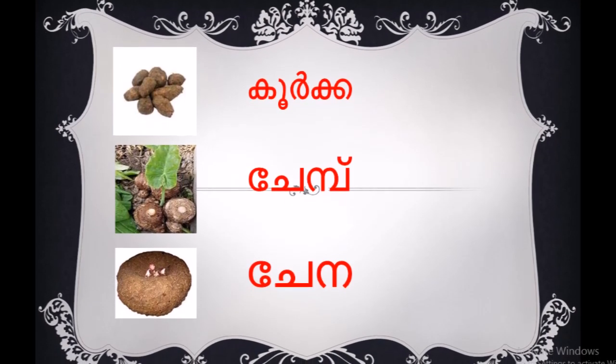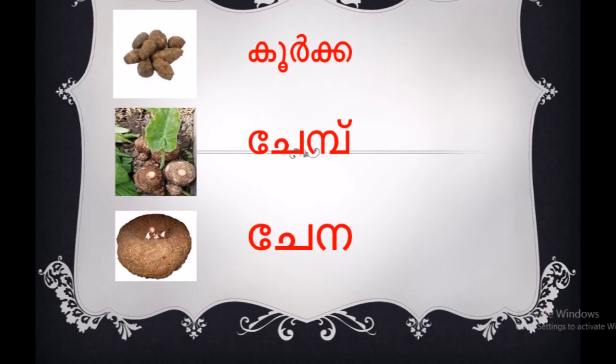Again, look at these vegetables — they are very common in our household. Do you know their names in English? One of the vegetables which is very common and popular in our household is kurka. Do you know its English name? Look at the picture — it is known as Chinese potato. Yes, it is easy to remember. I don't know whether the name came because it originated from China, but it is known as Chinese potato.